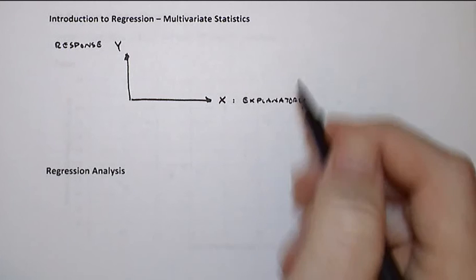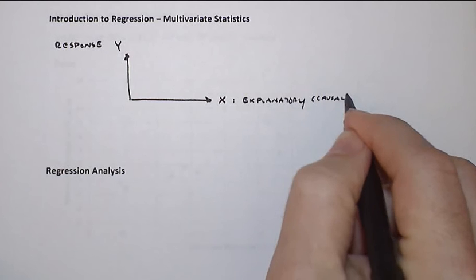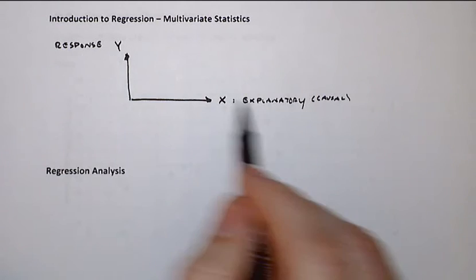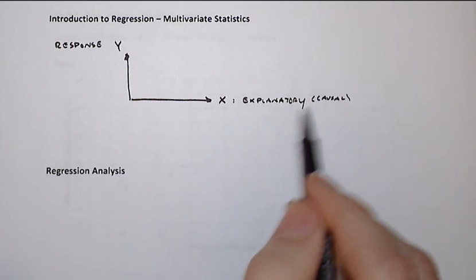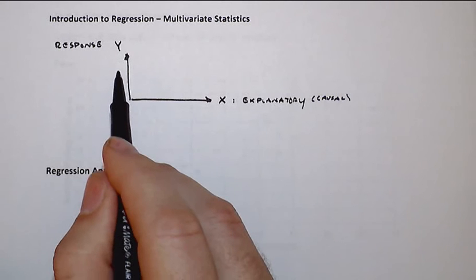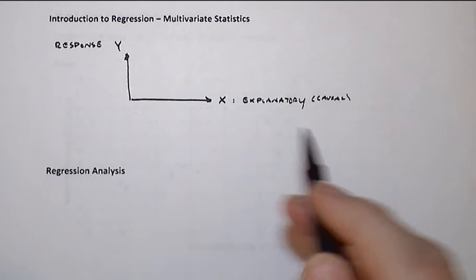Because this explanatory variable is often sometimes also called the causal variable, that you're thinking that somehow the response is explained by or caused by this other random variable. So yes, we can indeterminately or indiscriminately switch these two, but that doesn't mean we have an appropriate relationship here.